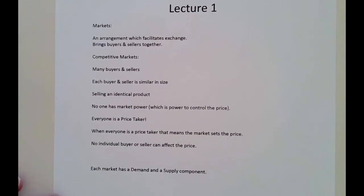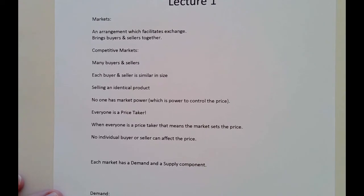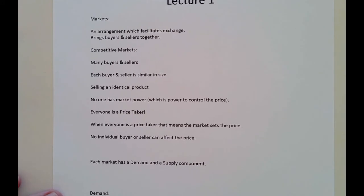Markets could be as simple as the roadside stand selling strawberries or oranges. Markets could be the local grocery store, a 7-Eleven. Markets could be global in nature — the stock market, currency markets, bitcoin markets. So markets are all over the place, and anywhere that buyers and sellers get together, markets are there.